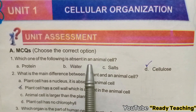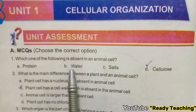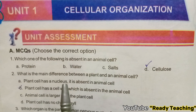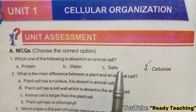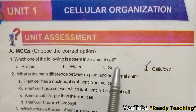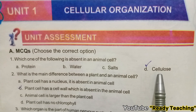First MCQ: Which one of the following is absent in an animal cell? Options include protein, water, salts, and cellulose. Cellulose is absent in an animal cell — it is not present in an animal cell.